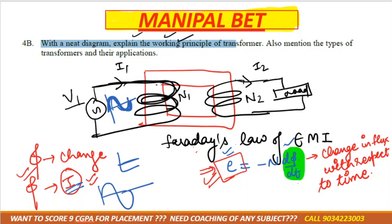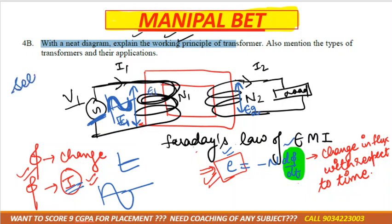EMF is induced in both windings — the primary winding E1 and the secondary winding E2. Just like you buying a gift for yourself is self-love, when we provide supply voltage to the primary winding, the EMF induced in the primary only is known as self-induced EMF.